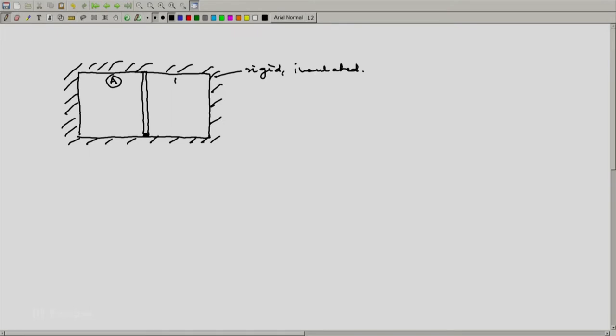Let us sketch our system. I will show the piston by means of a thin partition, leak-proof and frictionless. The whole system is rigid and insulated. So the full system is rigid and insulated. This is side A, this is side B.